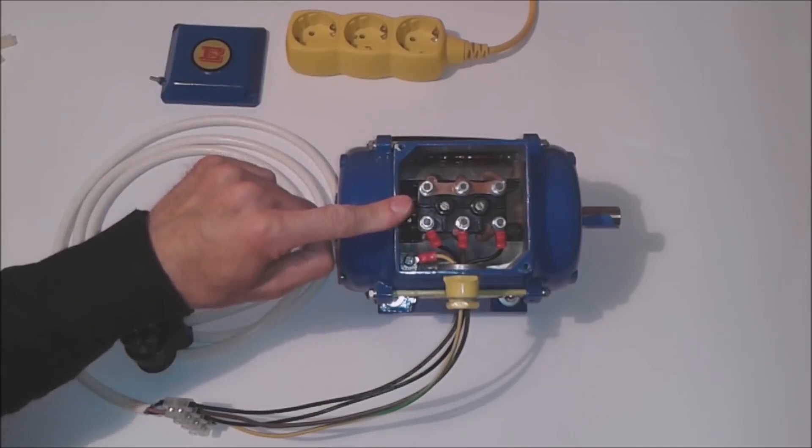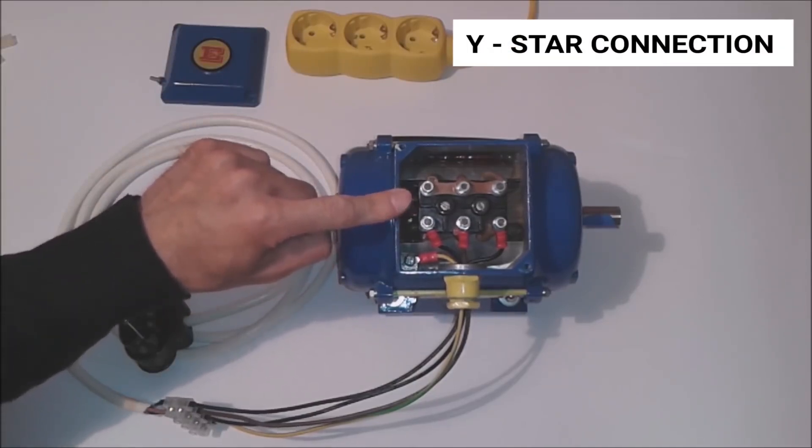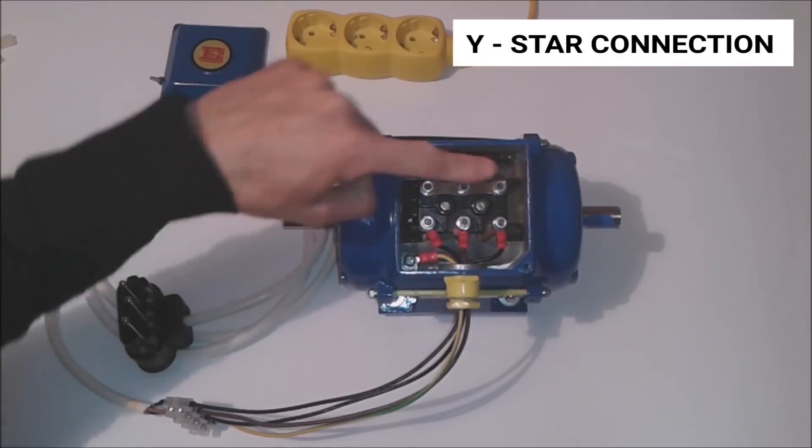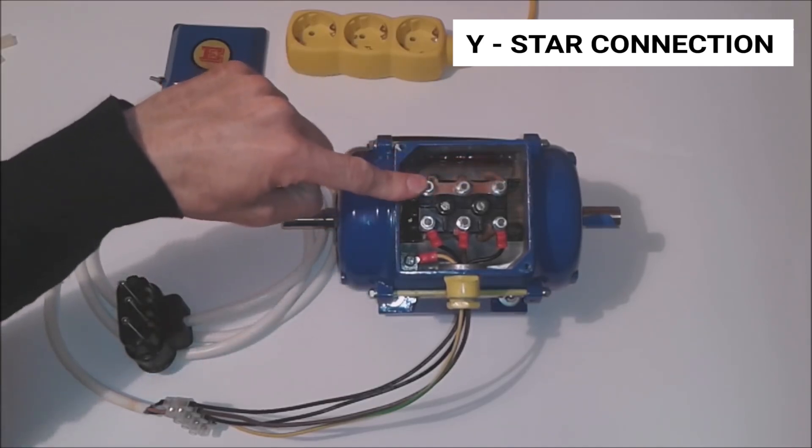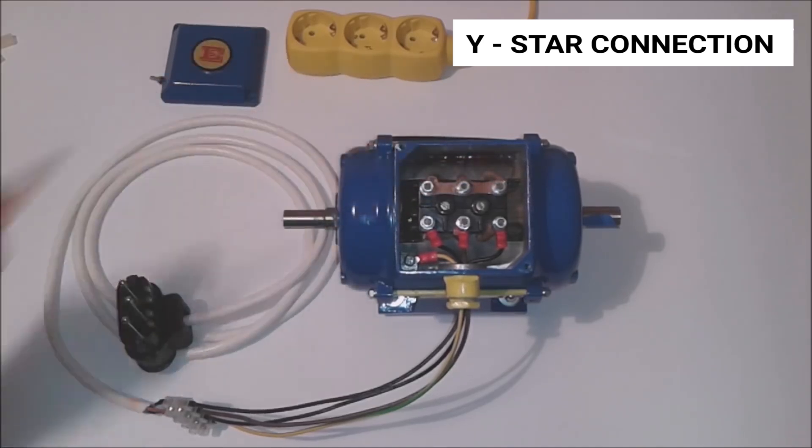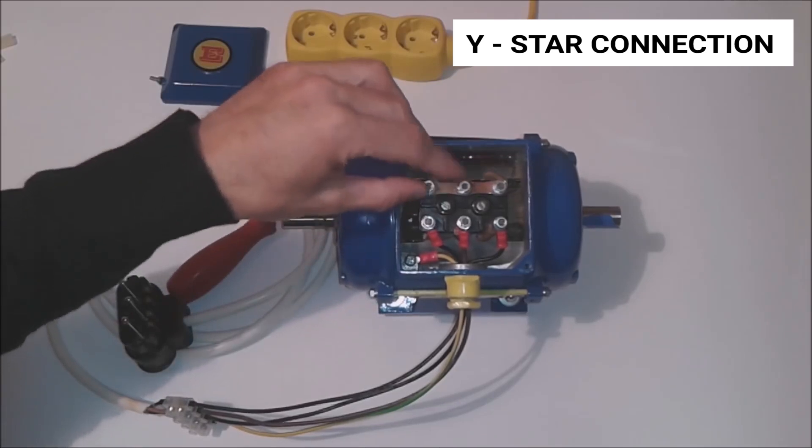We see the ordinary connection of a three-phase electric motor into a star connection, so the three ends of the coil are connected at one point. We switch the motor into a delta connection.